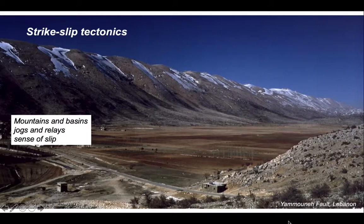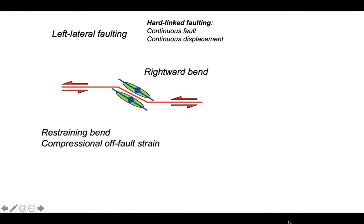In the continents, strike-slip faults are rarely straight. So let's look at what happens at bends. This cartoon is looking down on a fault system. The fault is in red and we can see that it has a bend on it. Imagine yourself standing at one end of this fault, looking towards the other — the fault bends towards the right. It doesn't matter which end you stand; it bends to the right. The other critical piece of information is the sense of movement — in this case, it's a left lateral fault. So the geometry we have is a rightward bend on a left lateral fault.